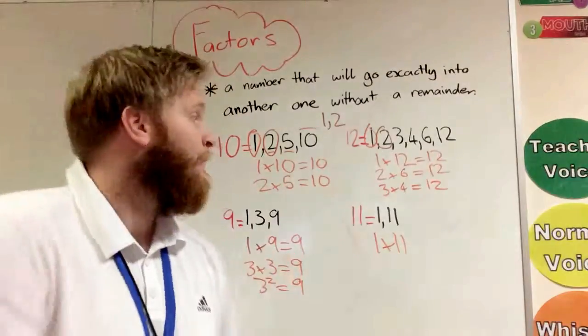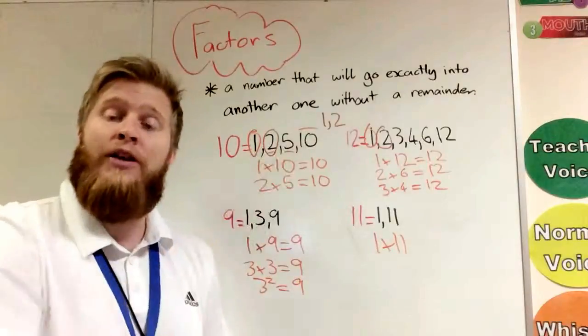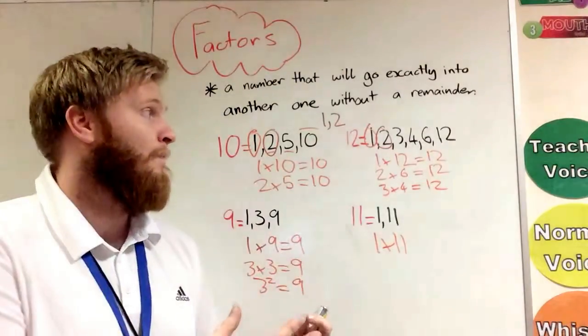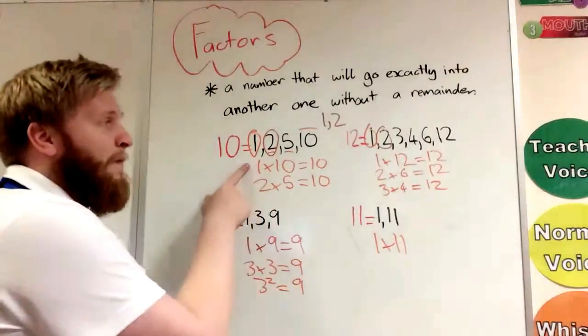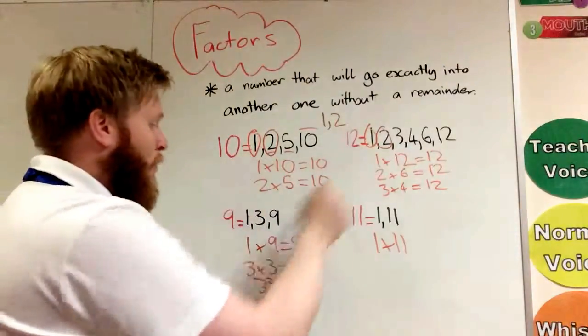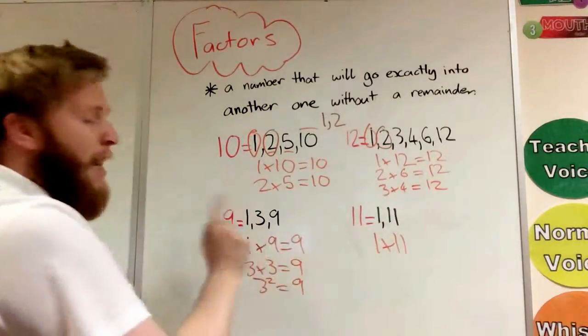So a couple of little things that we're going to look at extra with factors. One thing I always remember: 1 will be a factor of every number, because 1 times that number will always equal the same number. So 1 will always be a factor, as well as the actual number you're looking at.